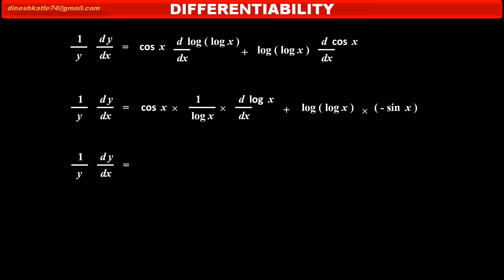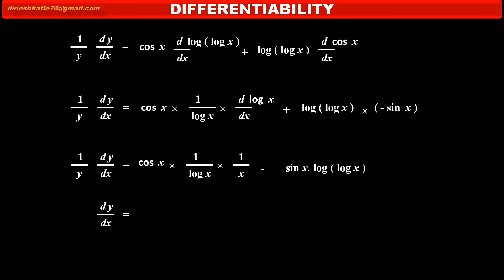Now, on the left hand side, (1/y) · (dy/dx) is equal to: on the right hand side, cos x · (1/log x) · (1/x), which simplifies to cos x/(x log x). Then, because of minus sin x, the plus becomes minus, giving minus sin x · log(log x).